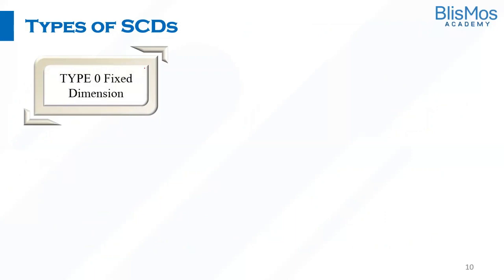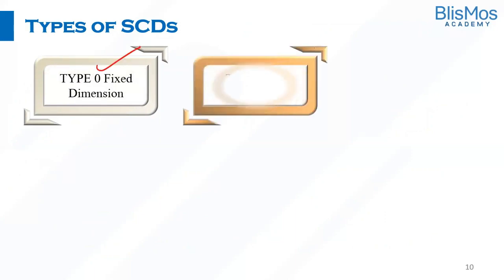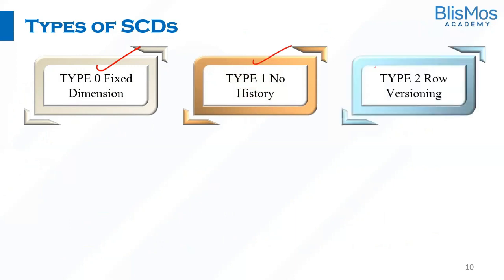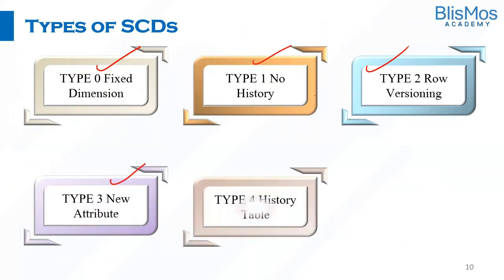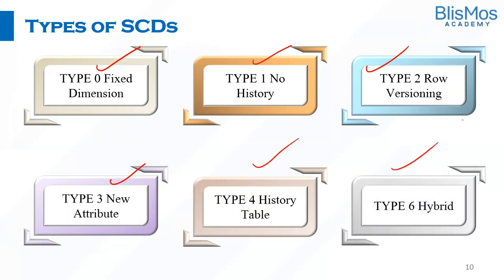This tracking and maintaining of historical data is dealt through Type 0 to Type 6 SCDs. We have Type 0 SCD, which is a fixed dimension. Type 1 SCD, where we are not maintaining the history. Type 2 has row versioning. Type 3 has a new attribute. Type 4 has a history table, and Type 6 is a hybrid. We will look at all these SCD types as part of the subsequent videos. Thank you.